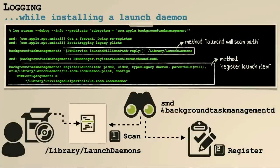We can see two things happening. There are two binaries — two processes — that appear to be responsible for BTM. One is called SMD and the other is called Background Task Management Daemon. Based on the method names, we first see one called 'launchd will scan path' and then another called 'registered launch item.' It appears the operating system noticed a new item was persisted, scanned that directory, and then registered that item.